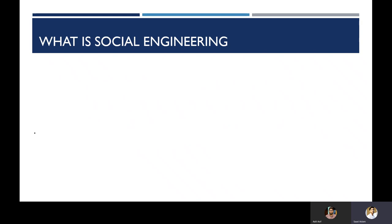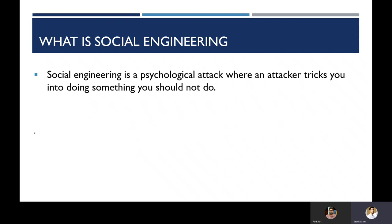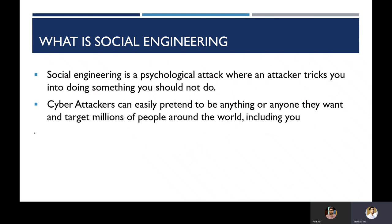So how do they do it? In cyber security, we call it social engineering. Social engineering is a psychological attack where an attacker tricks you into doing something you should not do. It's a type of psychological manipulation where the attacker emotionally tries to misguide you. Cyber attackers can easily pretend to be anything or anyone they want and target millions of people around the world, including you.